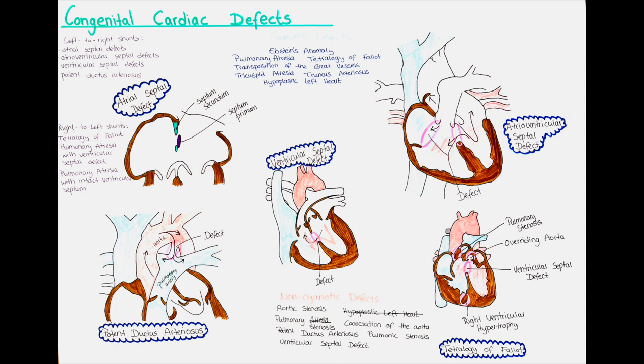The severity of a left-to-right shunt depends on the location, the structures involved, the size of the defect, and the ratio between systemic and pulmonary vascular resistance. When there is increased blood flow to the lungs, it puts more pressure on the pulmonary vessels, leading to pulmonary vascular obstructive disease. In a left-to-right shunt, there is a change in the vessels leading to increased vascular resistance, essentially pulmonary hypertension.